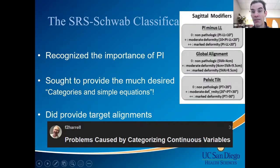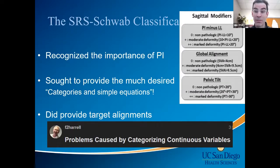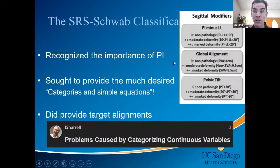Targeting lordosis and lordosis distribution is what we should be doing — the result will be elimination of pelvic tilt. A patient with a PI of 80 may very likely have a pelvic tilt greater than 20 degrees and be totally normal. A patient with a PI of 40 with a pelvic tilt of 10 degrees can actually be very bad — quite a bit of pelvic retroversion compensating for their lumbar flat back.